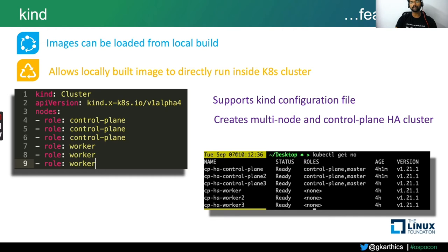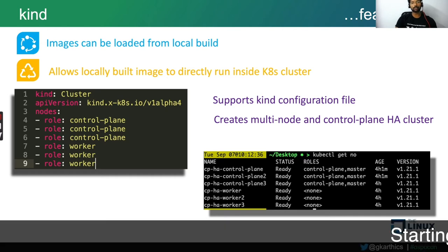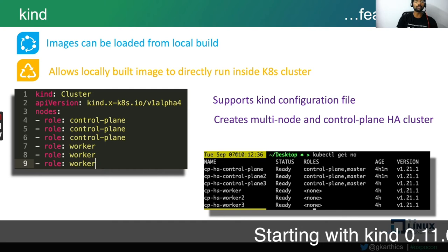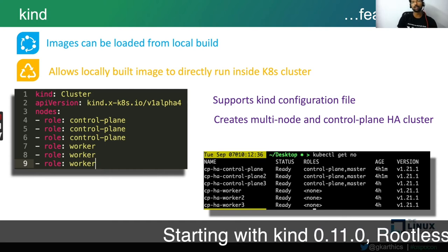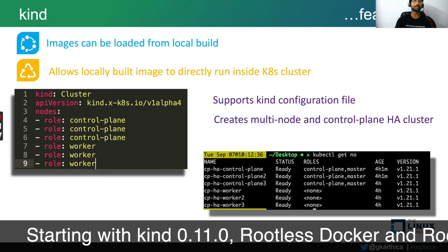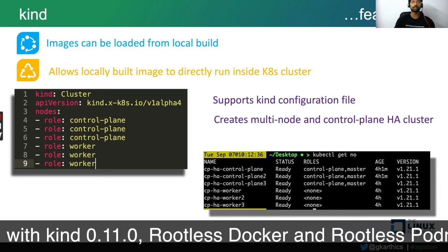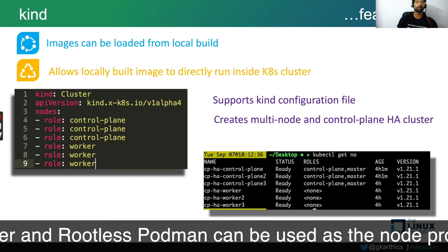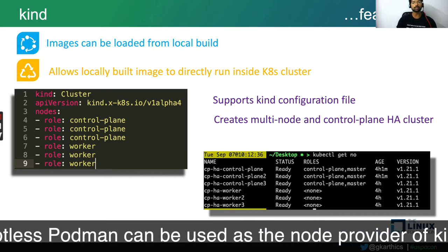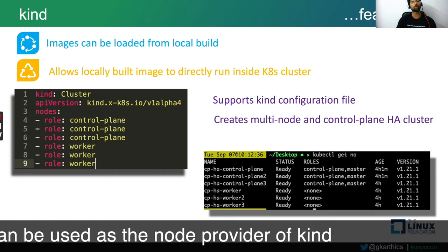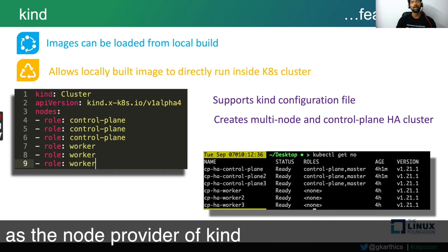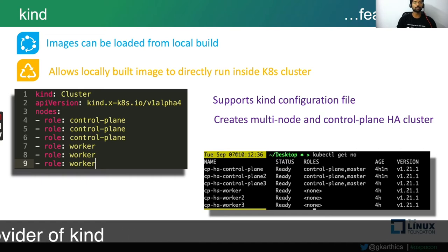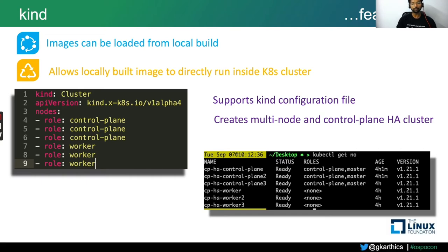Another advantage of kind is that you can load locally built Docker images into the Kubernetes cluster easily. This allows you to develop, deploy, and test in a Kubernetes cluster immediately. For example, if you're developing a cloud-native application and want to test it immediately, you can build it locally, load the image into the kind cluster, deploy it, and validate the behavior — which greatly improves SDLC timing.